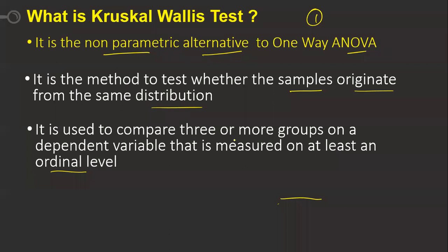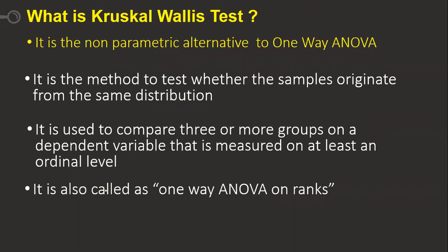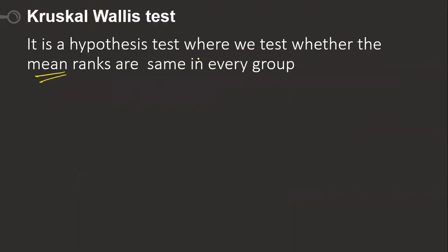What is the meaning of this? There are three or more groups where we have a dependent variable that is measured on at least an ordinal level — this particular variable should follow an order. It is also called as one-way ANOVA on ranks. It is a hypothesis test where we test whether the mean ranks are the same in every group.